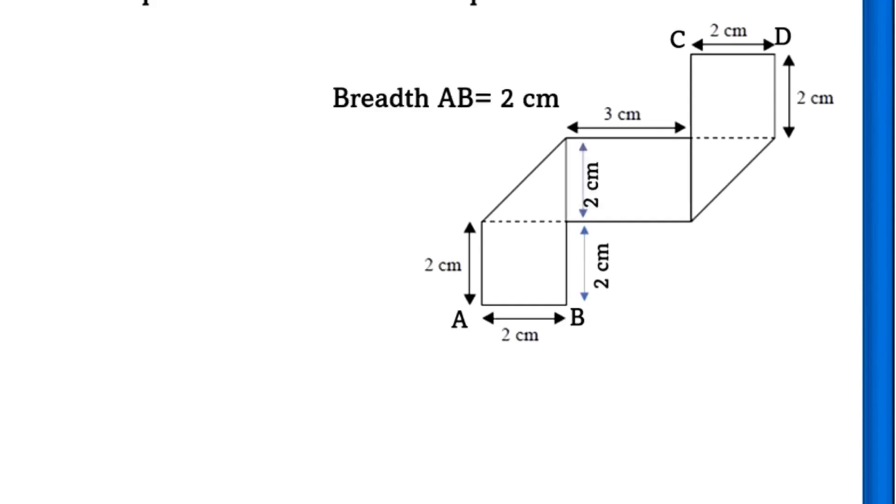the other half of the B side will also be 2 cm. So the total B side is equal to 4 cm. Similarly, the C side is equal to 4 cm.